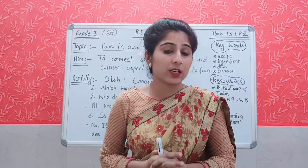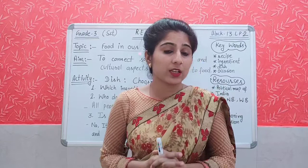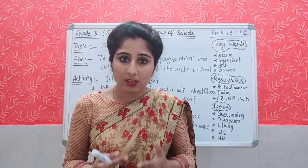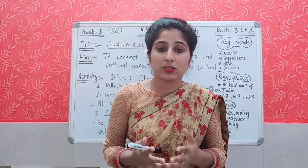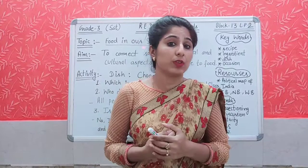You have seen the picture of Churma. Now tell me, which is the main ingredient used in Churma? The wheat flour. And what else is used? Ghee, Bura — the sweet, you can say sugar — and jaggery. These things are the main ingredients to make Churma. The most important ingredient is wheat flour, and we get wheat flour from wheat.